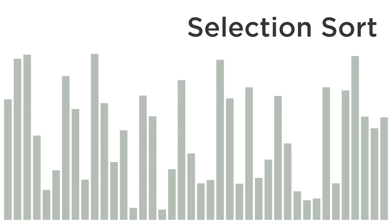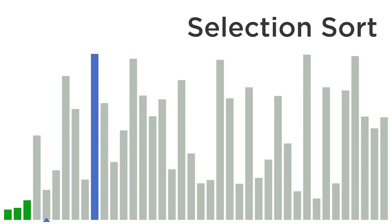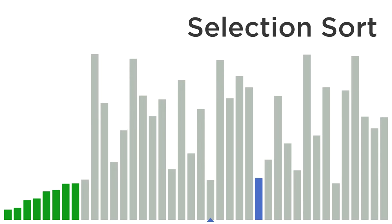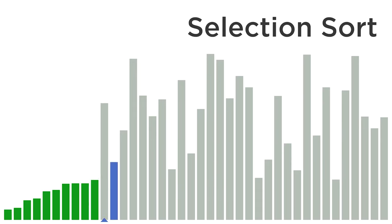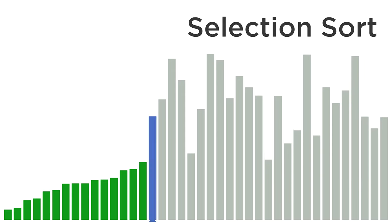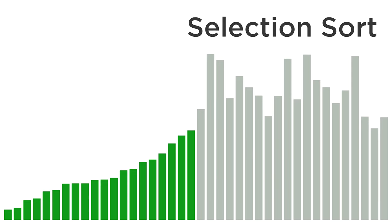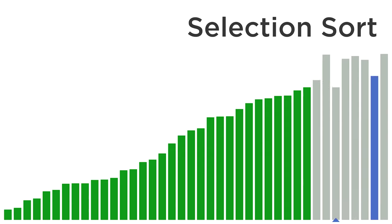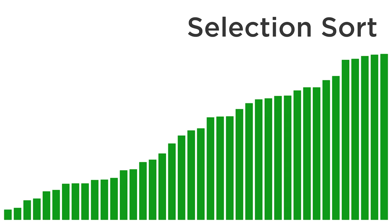Recall that in selection sort, the way the algorithm works is by taking an array of numbers and repeating some process: looking through that entire array of numbers to find the smallest item, and then bringing that smallest item to the beginning of the array. Then we search through the remainder of the array, looking for the next smallest item, and bring it back to the beginning. We repeat that process, continually looking through the remaining unsorted portion of the array, finding the smallest element, and swapping it with the element in the next position. Once we repeat that process through the entire array, we'll end up with a sorted array.